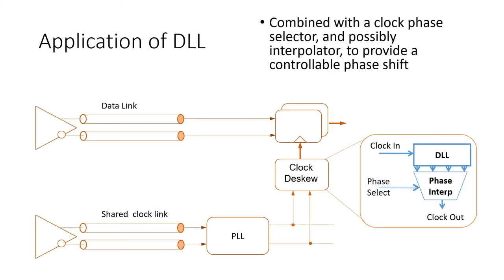So here's a quick example of the utility of a delay lock loop in a real application. Imagine that you're communicating data across a link between chips and you're also forwarding a clock from one chip to the other. Now, at some point, the chip on the right is going to have to capture the incoming data with some latches.